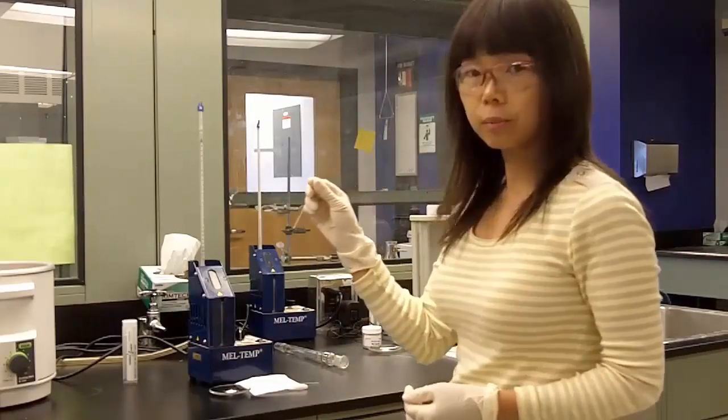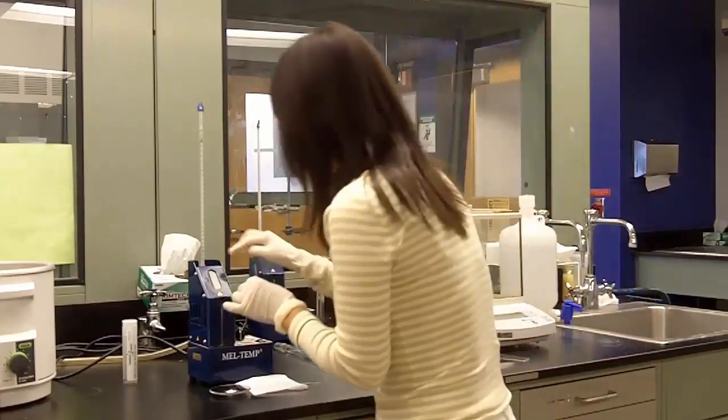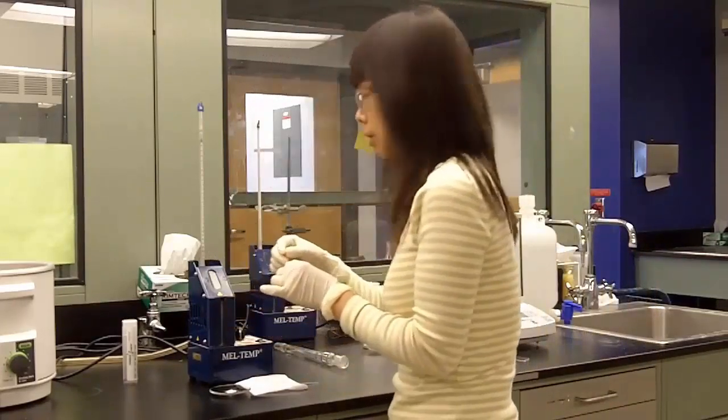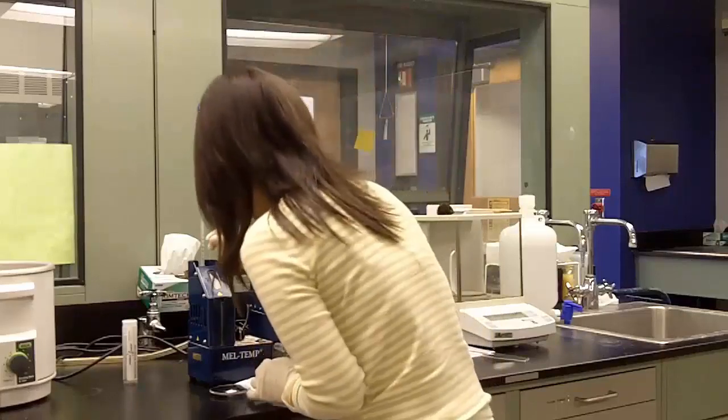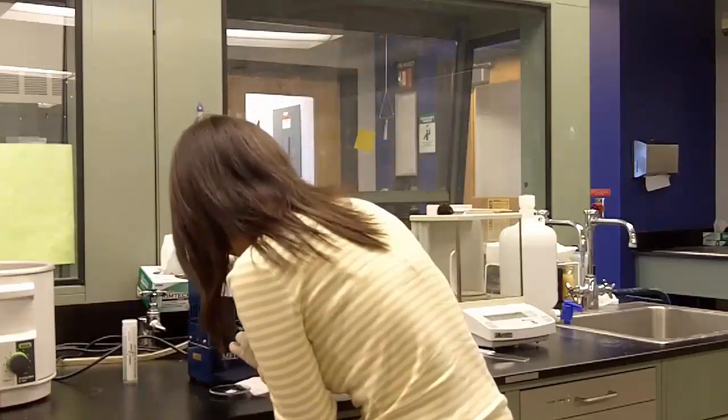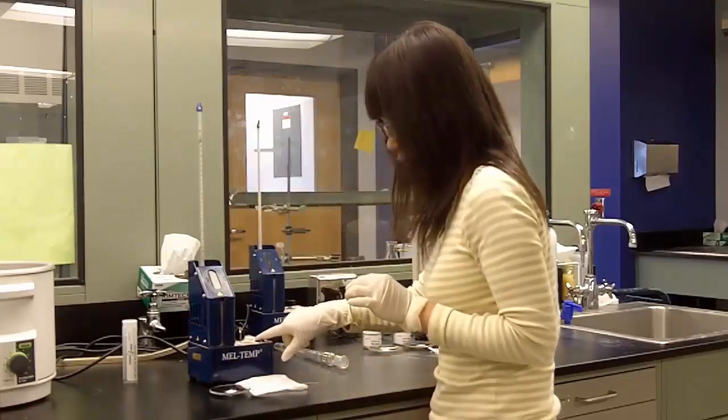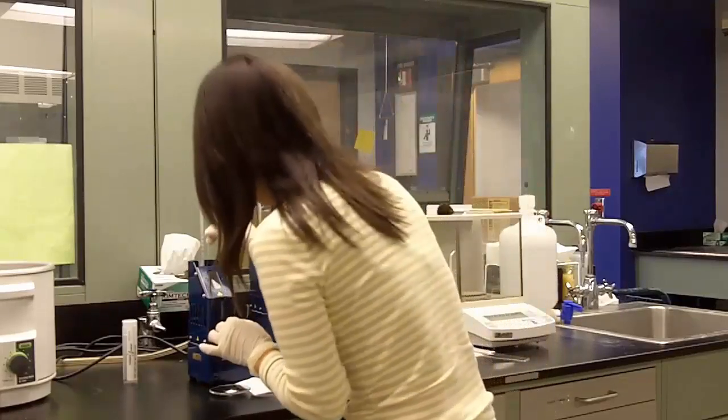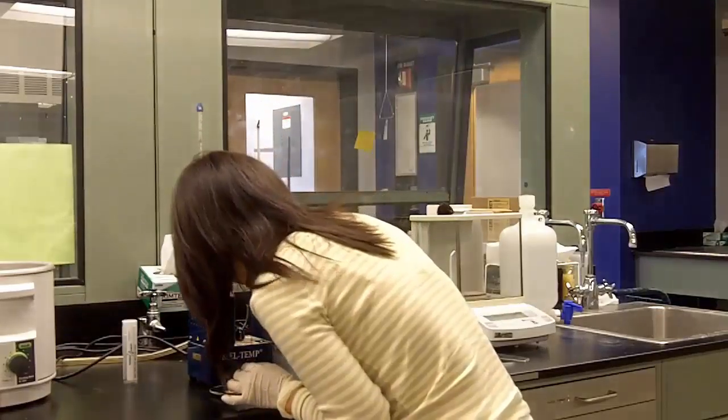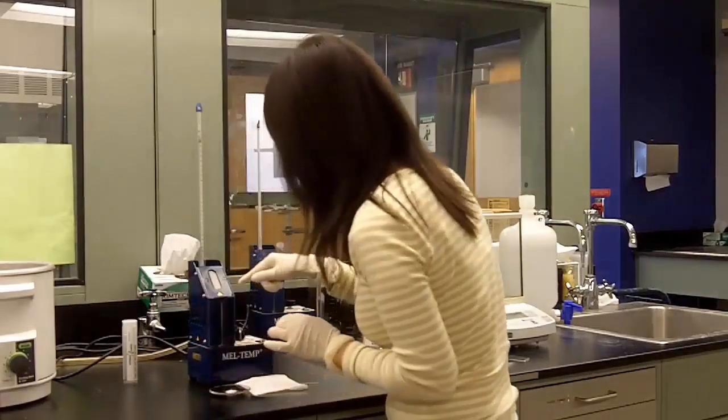We're going to take a rough melting point. There are three slots in the melt temp, and let's put this in the middle slot. To see your sample, make sure you turn the switch on. And then through the lights from underneath the magnifying glass, you can see your sample.